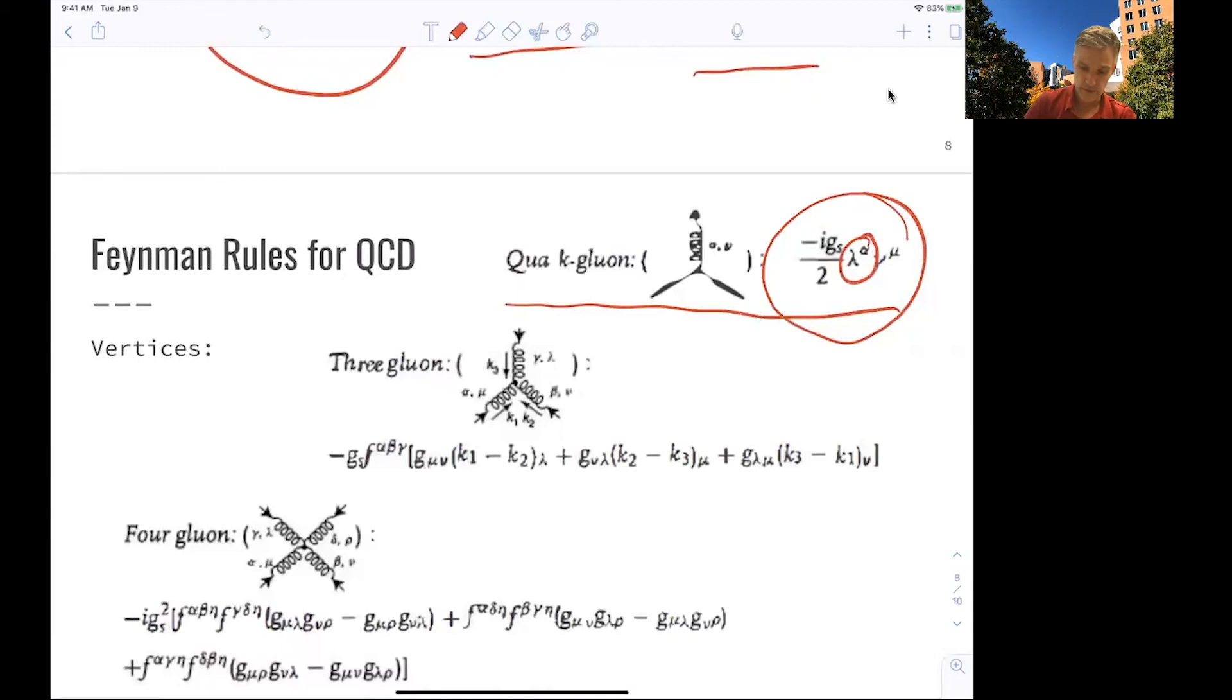But we have this three-gluon vertex and the four-gluon vertex as well, and those come with structure functions here to keep track of the permutations, commutations between color involved. And it becomes more complicated for this four-gluon vertex, which has pairs of those structure constants each.